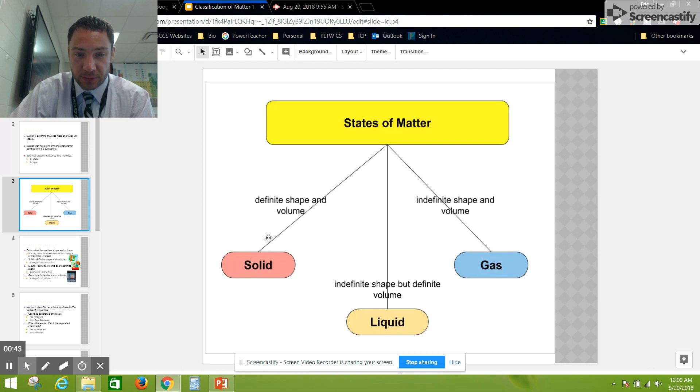Here's a little graphic organizer to help you understand the three main states of matter: solid, liquid, and gas. There is a fourth state, plasma, but we're not going to focus on it simply because it doesn't come up that often.